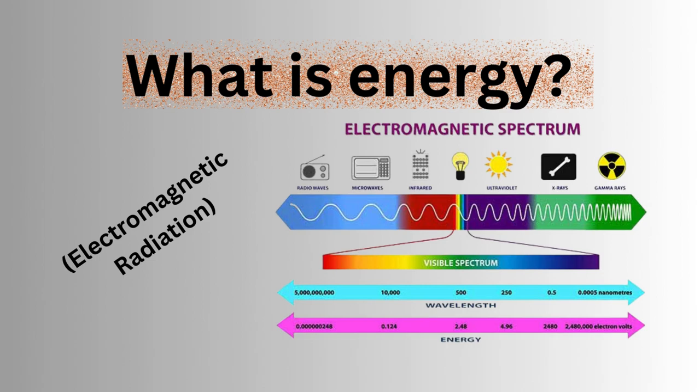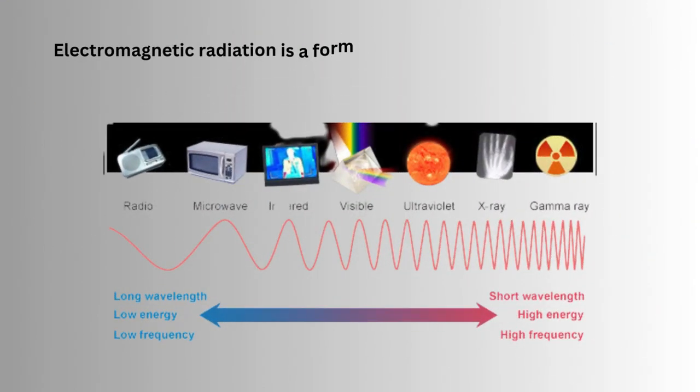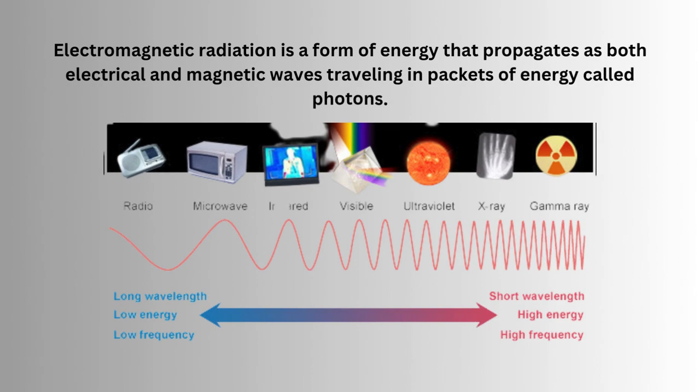What is energy? Electromagnetic radiation is a form of energy that propagates as both electrical and magnetic waves traveling in packets of energy called photons.